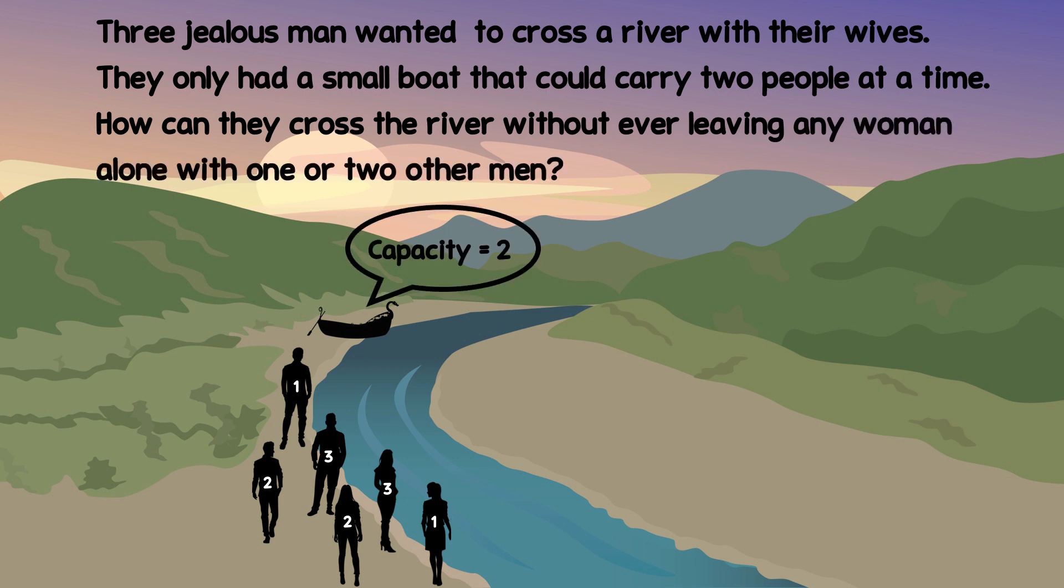For example, women number one and two can cross the river because man number three is with woman number three. But man number one cannot cross the river because then woman number one would be left alone with man number two and three.